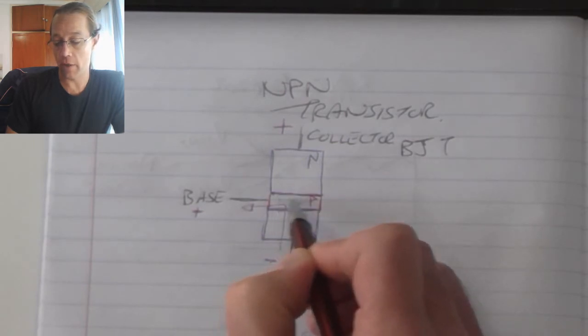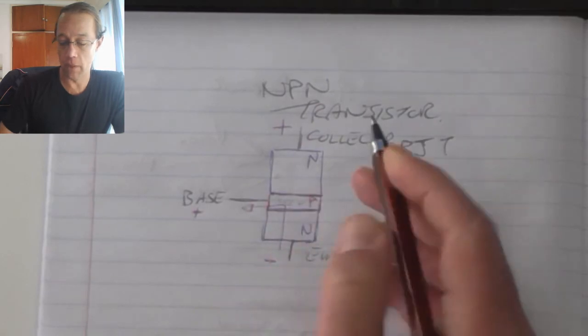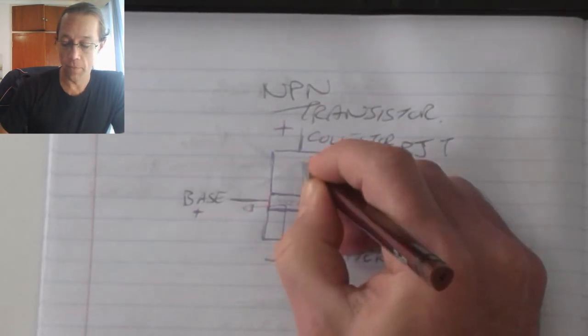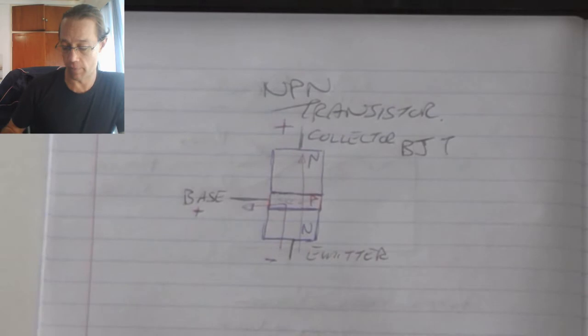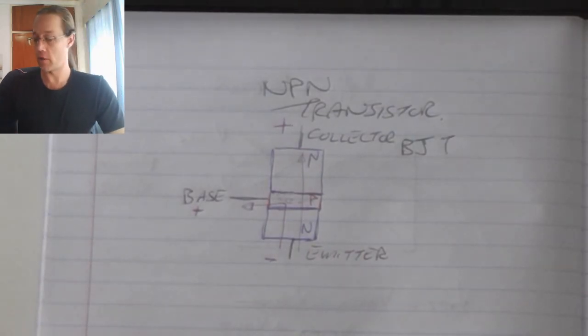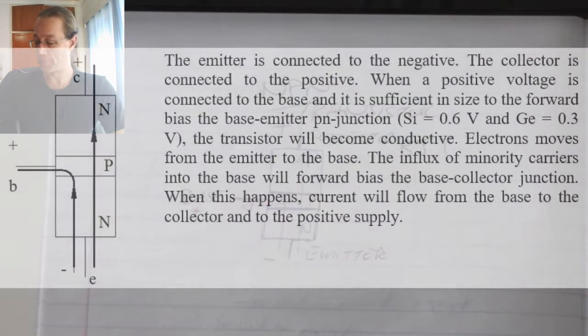Because of that negative inside the P-type material, that bottom P-N junction becomes forward biased and that allows for conduction to take place from the emitter through both P-N junctions and out the collector.